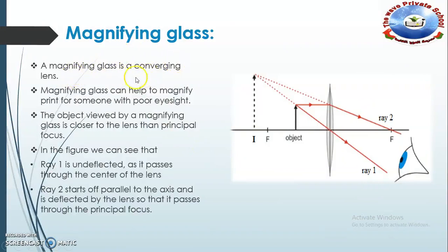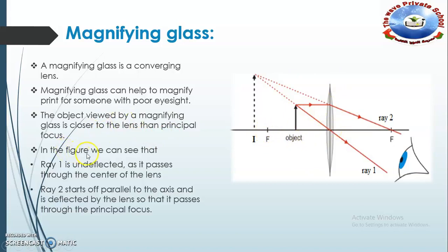A magnifying glass can help to magnify print for someone with poor eyes. The object viewed by the magnifying glass is closer to the principal focus. As you can see in this picture, the object is nearer to the converging lens than to the principal focus.